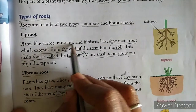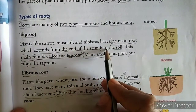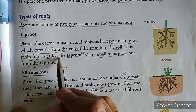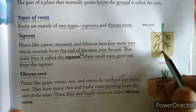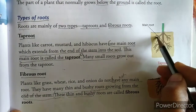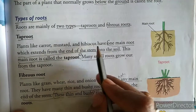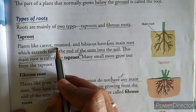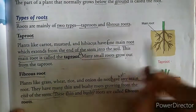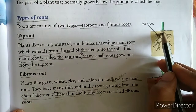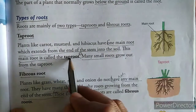Plants like carrot, mustard, and hibiscus have one main root which extends from the end of the stem into the soil. This main root is called the tap root. Tap root mein kya hota hai? One main root hoti hai, aur isse alag-alag small roots nikalti hain. So, carrot, mustard, and hibiscus mein ek main root hoti hai. This is called tap root.